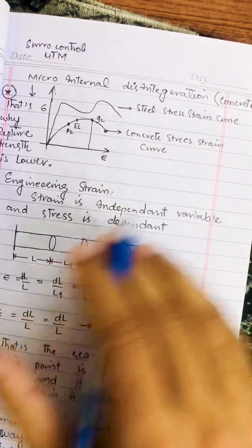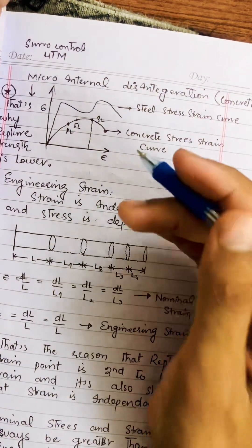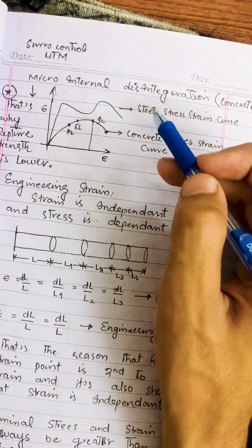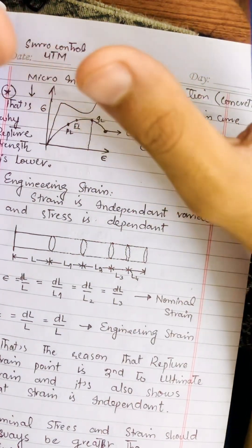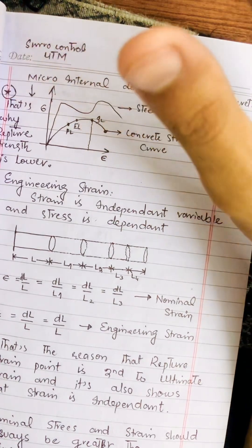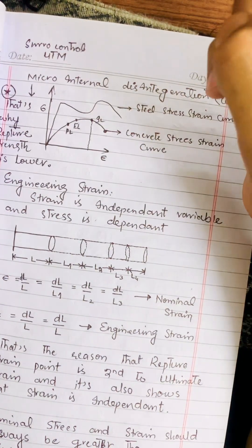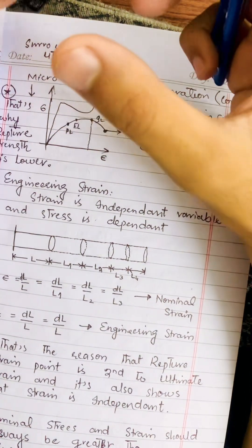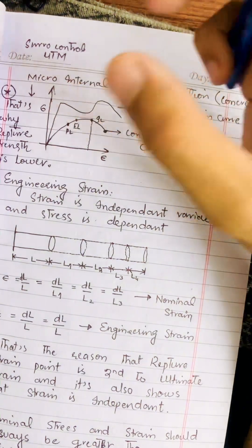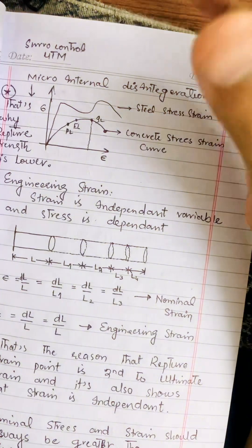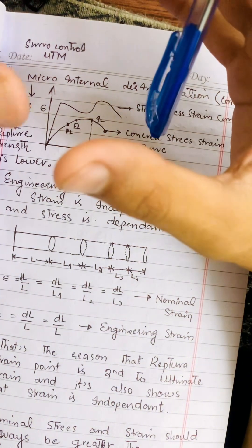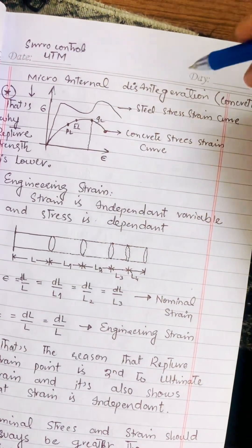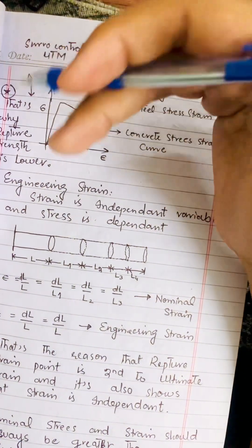The reason rupture stress is lower than ultimate stress in concrete is due to micro internal disintegration. As the material approaches rupture, internal micro-cracks form and propagate, reducing the effective resistance. That is why rupture strength is lower than ultimate strength.